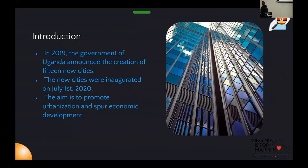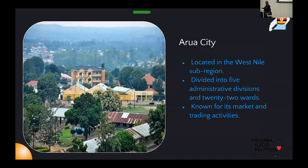In 2020, the government of Uganda inaugurated about 15 new cities, with the aim of development and increasing urbanization within Uganda. There are about 12 that are official right now, but our project ran in four of them.